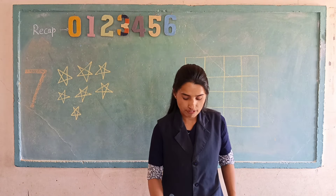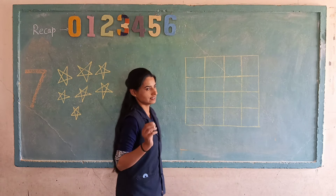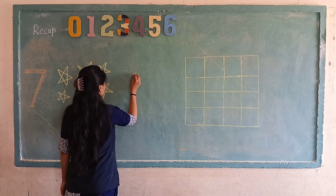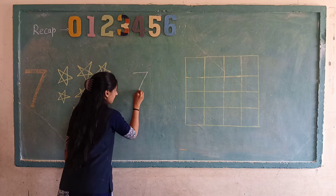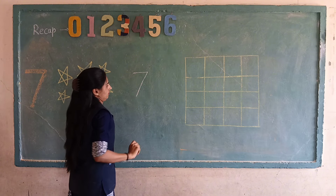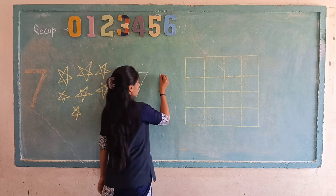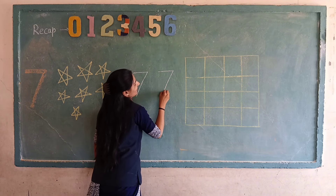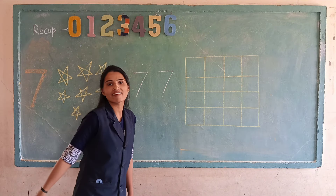How will we make 7? Let's see. Slipping line, slanting line — make 7. Slipping line, slanting line — make a 7.